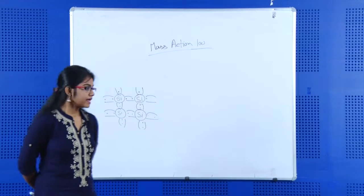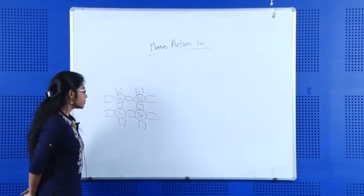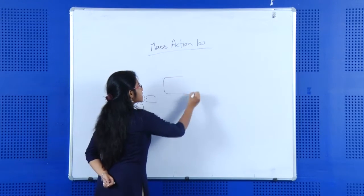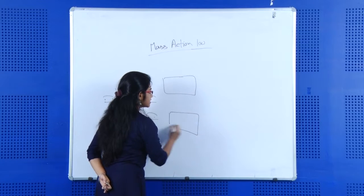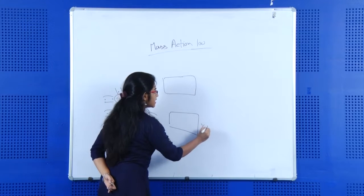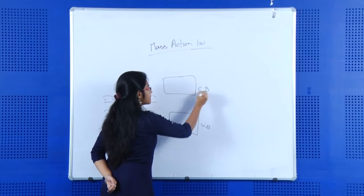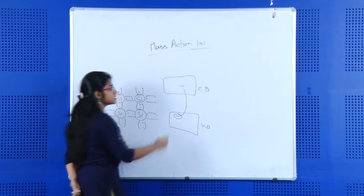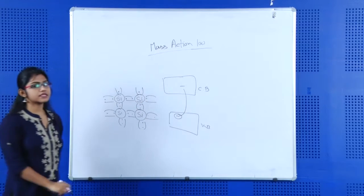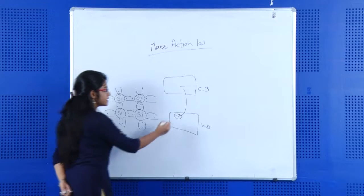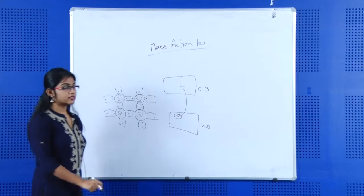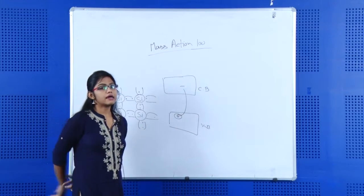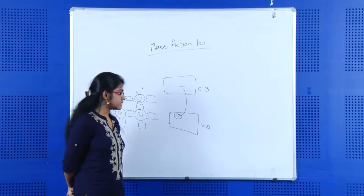Now what happens in case of a pure intrinsic semiconductor? One electron will move from the valence band to the conduction band, and then this place will be replaced by a hole. So this process is called electron-hole pair generation.